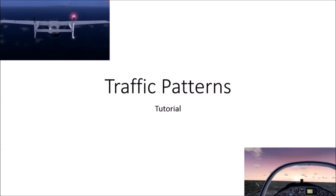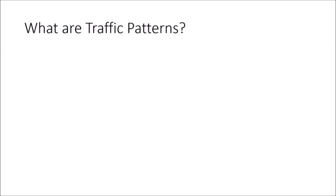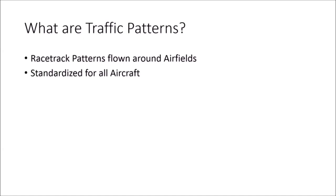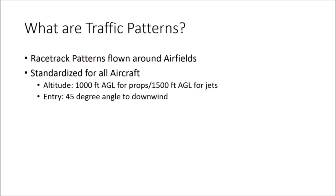Traffic patterns are racetrack patterns that we fly around an airfield. Every airfield has a traffic pattern, and these traffic patterns are the same for all airplanes — they're standardized. This means that all airplanes follow specific altitudes and specific entry procedures. Usually you fly them at 1,000 feet above ground level with propeller aircraft and 1,500 feet above ground level with jet airplanes. So if my airfield is at 2,000 feet above sea level, I'd be flying my traffic pattern at 3,000 feet above sea level as a propeller aircraft, or 3,500 feet as a jet. The entry of traffic patterns is at a 45-degree angle to the downwind leg — procedures in Europe, America, and other countries are obviously different.